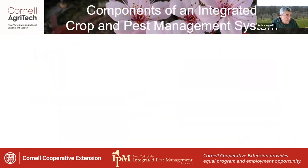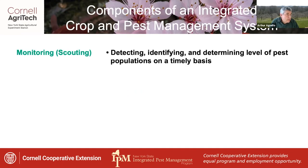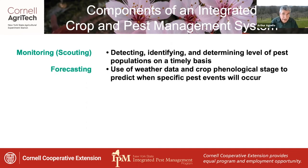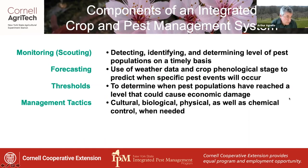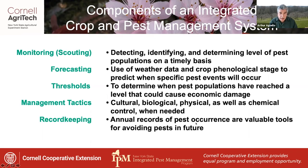To summarize, the main components of an integrated crop and pest management system include: monitoring, also known as scouting, to detect, identify, and determine the level of pest populations on a timely basis; forecasting, the use of weather and crop phenology data to predict when specific pest events will occur; thresholds, used to determine when pest populations have reached a level that could cause economic damage; management tactics, including cultural, biological, physical, as well as chemical control as needed; and record keeping, which is a very important practice because annual records of pest occurrence are valuable tools for avoiding pests in the future.